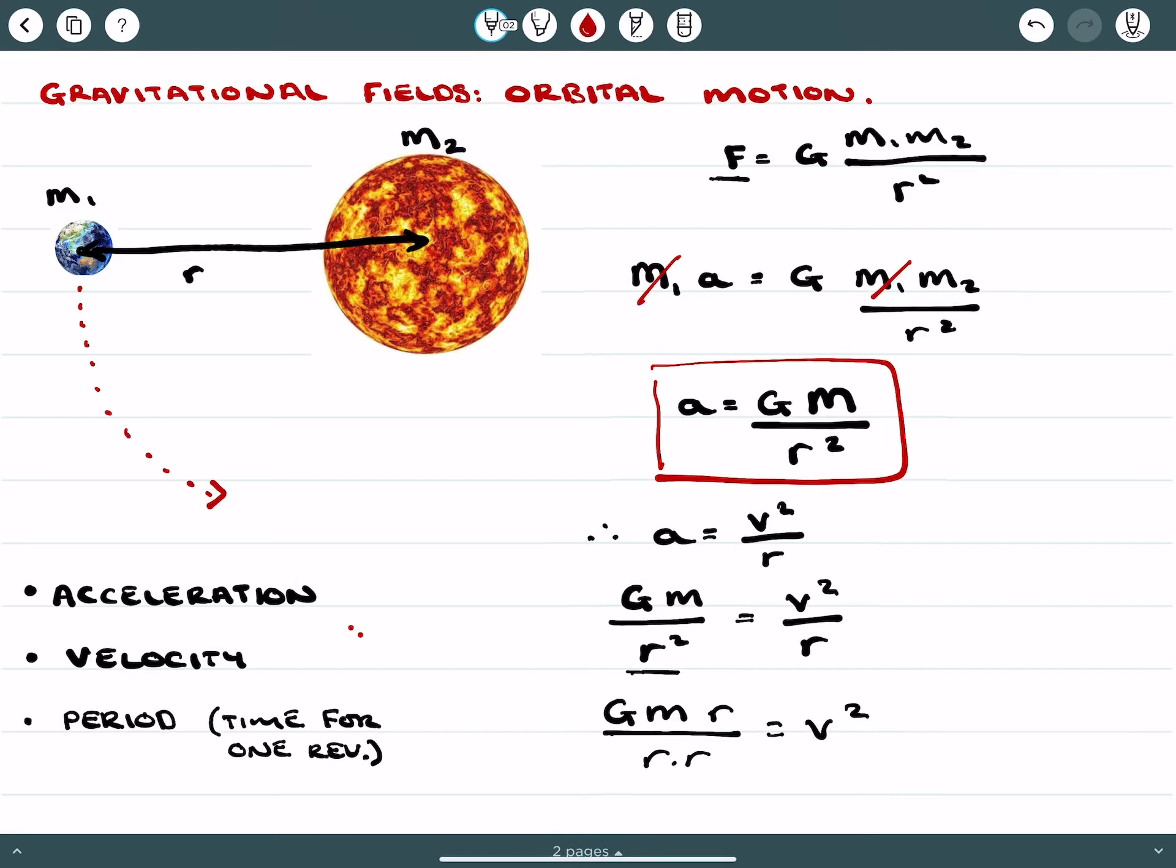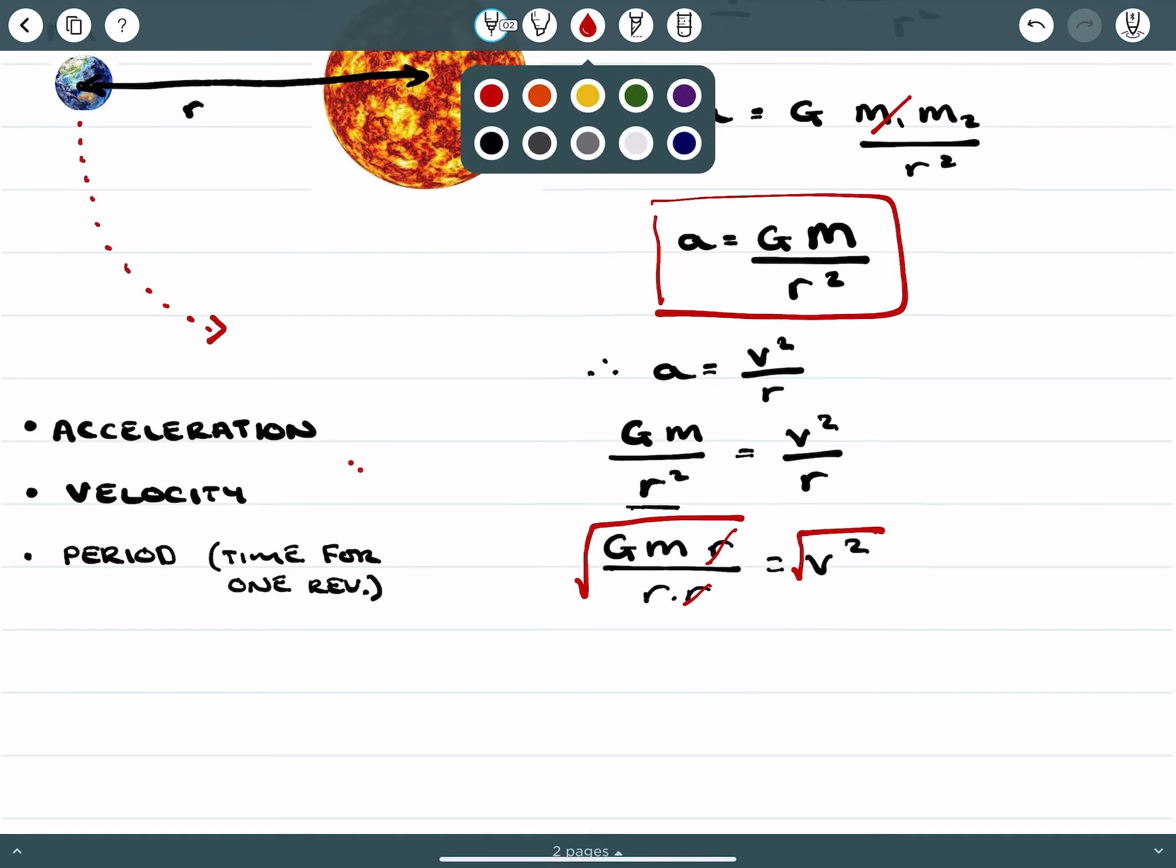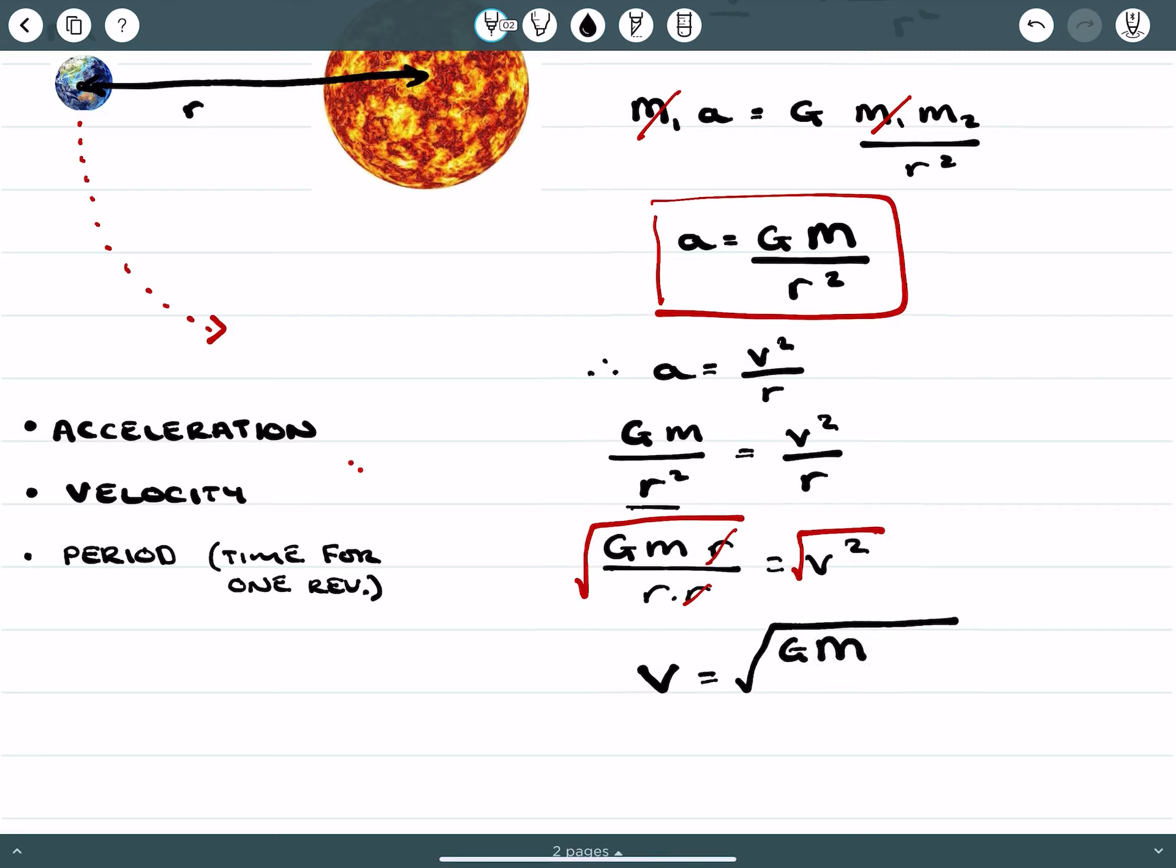And this r squared here I'm just going to write it as r times r equals v squared. And what we can do here is we can cancel out the r's. We can square root both sides, and we end up getting an equation for velocity which is v equals the square root of the gravitational constant, the larger mass, all over the radius.